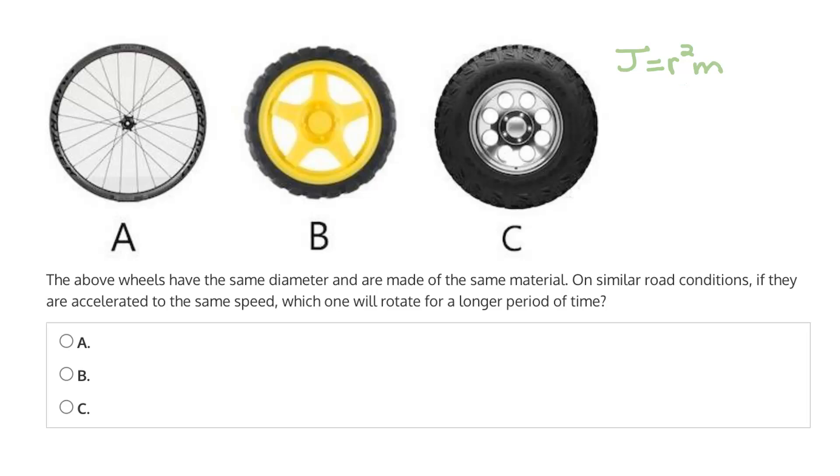So the only difference here is going to be the mass. And we already said that the weight, or the mass, of C is greater than that of both A and B. So for this reason, the polar moment of inertia will be greater for C than both A and B.